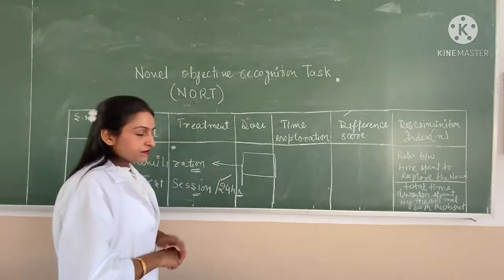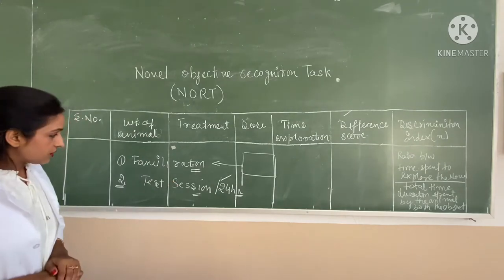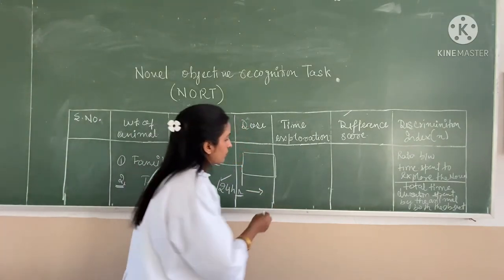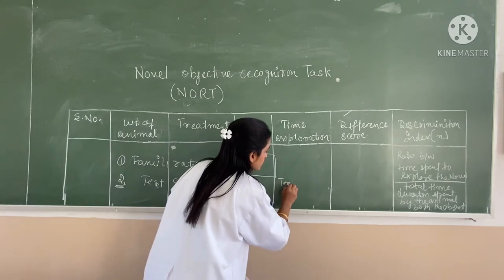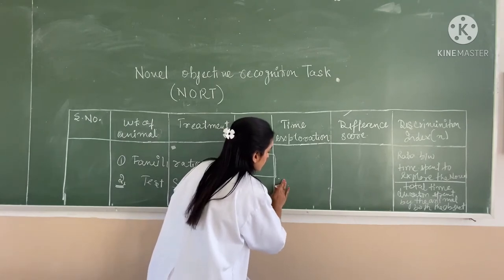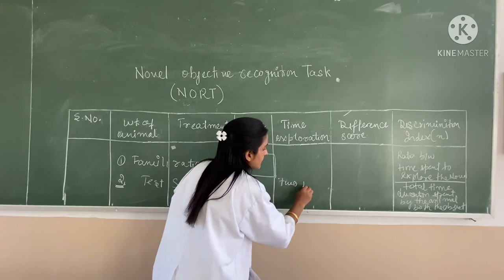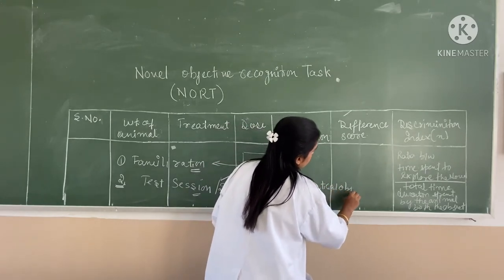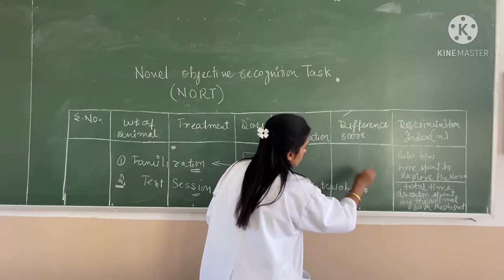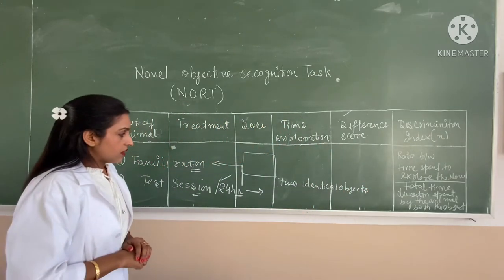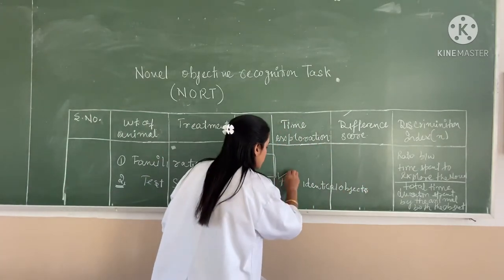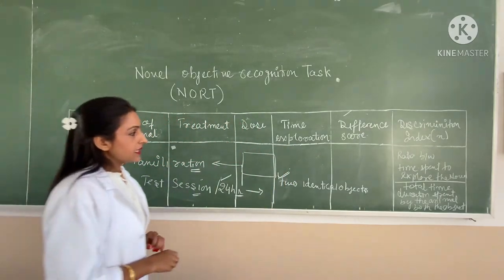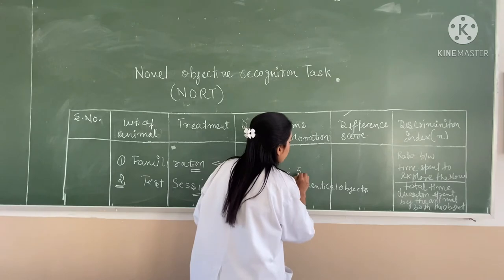24 hours after the familiarization session, we place the animal with two identical objects. And the duration of this phase is up to 5 minutes.